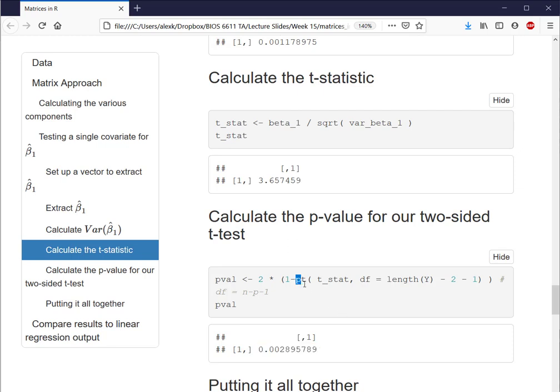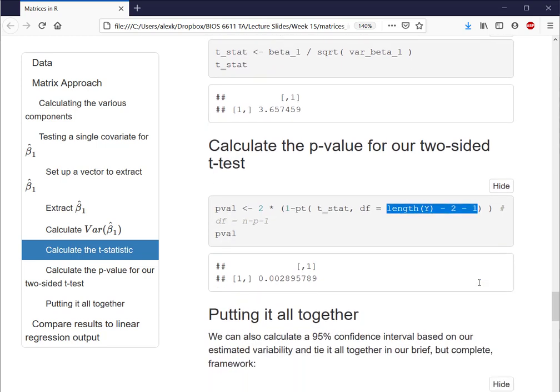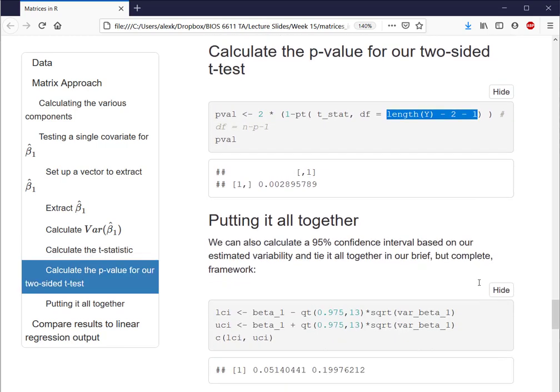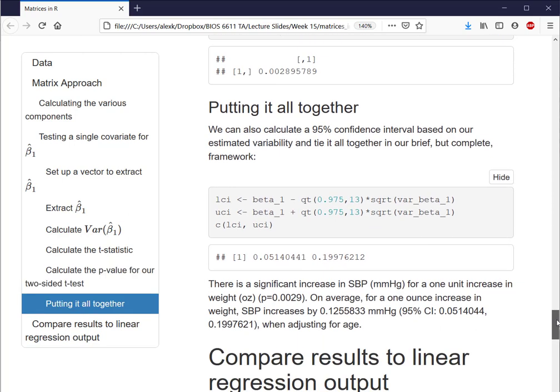We can also calculate the P value as well, which we see is 0.002895789. Here again, noting that we're using the PT function because this is with respect to the T distribution, where we'll plug in that T stat from the previous step, and then also put in the N minus P minus 1 degrees of freedom.